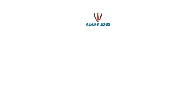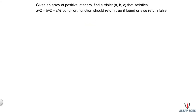Welcome to SF Jobs Lab, where we bring you all possible solutions to interview questions, including the most efficient ones. In today's problem, we are going to find a Pythagorean triplet in an array. We have an array of positive integers in which we need to find a triplet (a, b, c) that satisfies the condition: a² + b² = c², where a, b, c are elements of the array. The function should return true if such a triplet exists, or false otherwise.